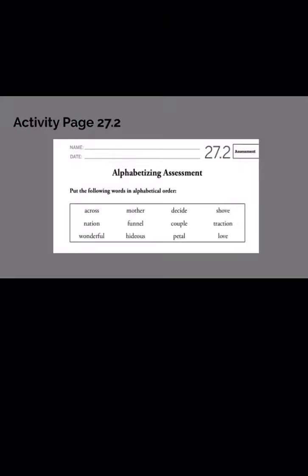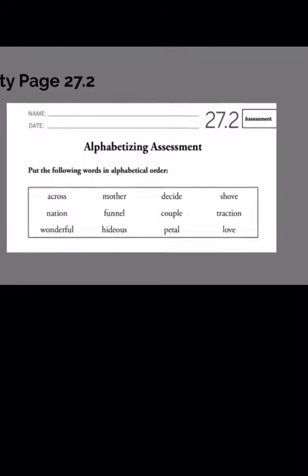Okay, all right, let's go into the next part. The next part is activity page 27.2. Here is where you're going to put words in alphabetical order. All of the words in the box are going to go in alphabetical order. You can pause this video now and complete this, or you can complete it after the video.